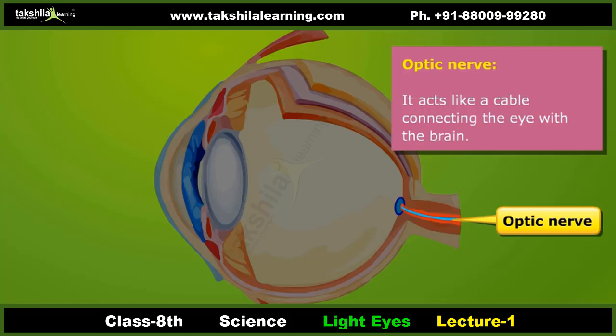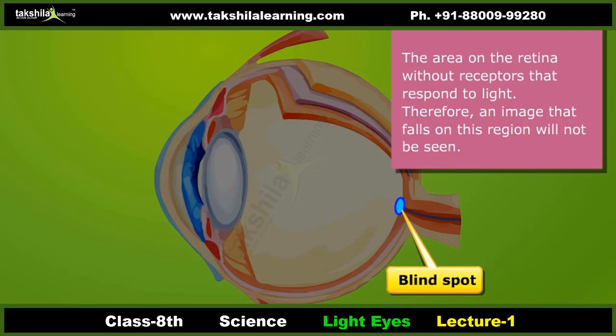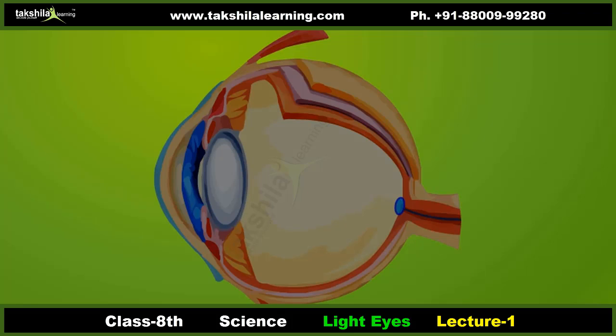Optic nerve: It acts like a cable connecting the eye with the brain, transmitting electrical impulses from the retina to the brain. Blind spot: At the junction of the optic nerve and the retina, there are no sensory cells, so no vision is possible at that spot. This region is known as the blind spot.